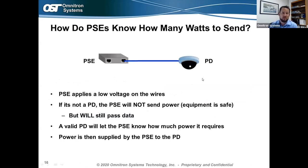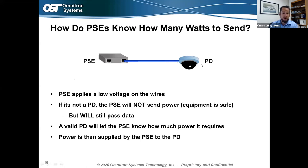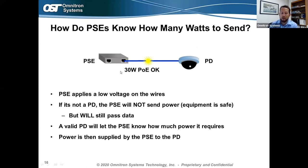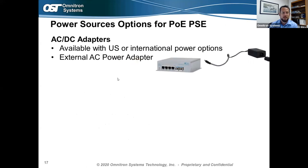How does power-sourcing equipment know how many watts to send? Through an auto-detection or handshake process: the PSE sends a low voltage on the Cat5/Cat6 cable. If it's not a powered device, the PSE sends no power and passes Ethernet data only. If it is a powered device, that device sends a command back saying, for example, 'I need no more than 30 watts,' and the PSE will send exactly that amount continuously along with data.